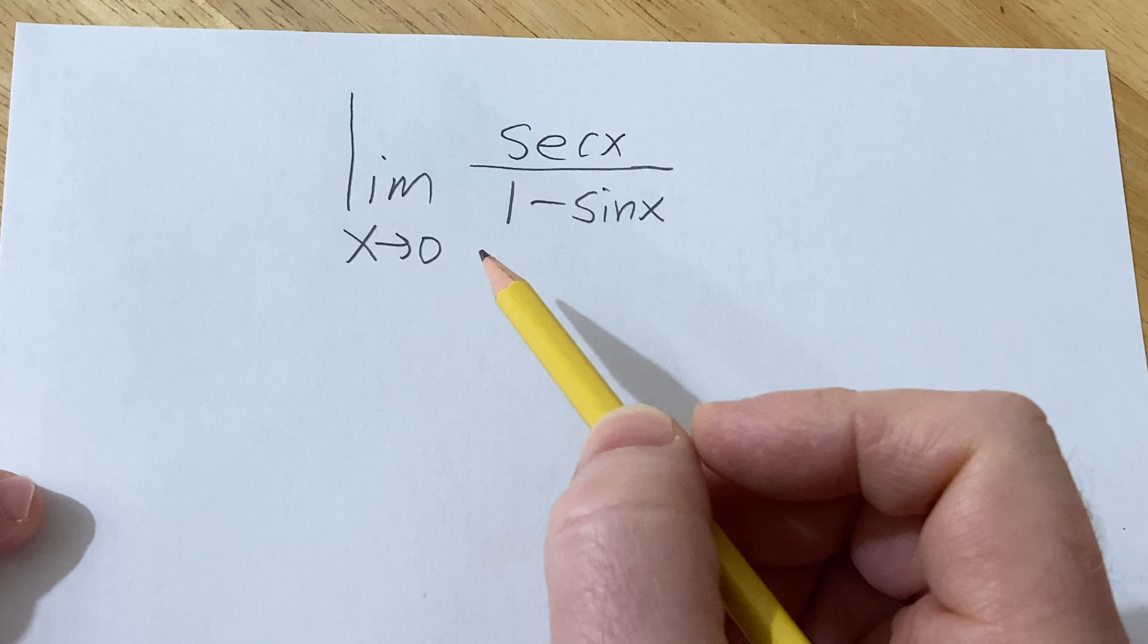And cosine of zero is actually just one, so this is equal to one over one over one minus sine of zero. Sine of zero is zero, so this is one minus zero. One over one is one, so we get one over one, and we just get one as the answer.